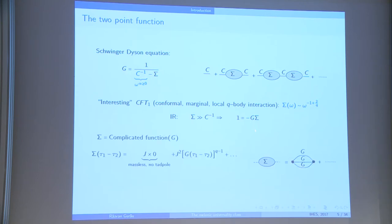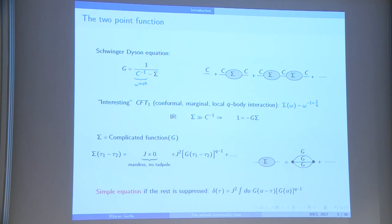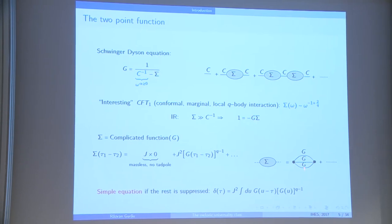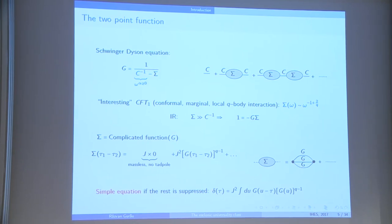The problem is that sigma, the self-energy, is a complicated function of the two-point function. Since we deal with a conformal massless theory, there is no tadpole. The first contribution to sigma consists of two vertices connected by IR two-point functions, but then there is an infinite list of further corrections. The simplest way to build an interesting CFT in dimension one is to imagine that by some miracle this equation truncates at first order, giving a closed equation: 1 equals a coupling constant G squared times a convolution of one G exterior and Q minus 1 G's in parallel for a Q-body interaction — assuming the theory is fermionic so antisymmetry absorbs the sign.